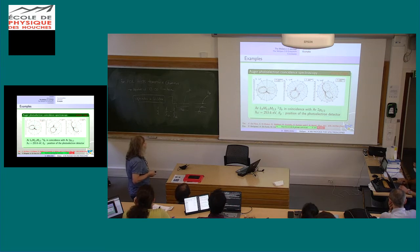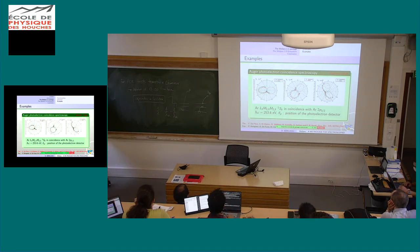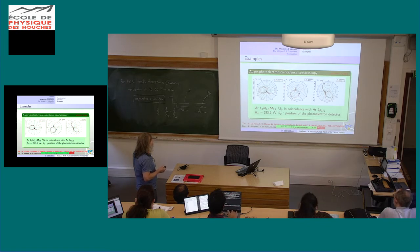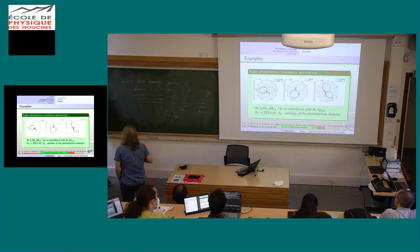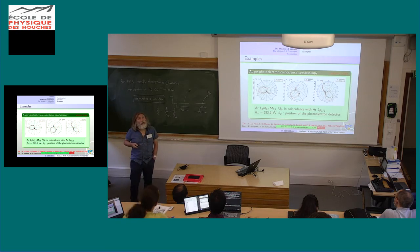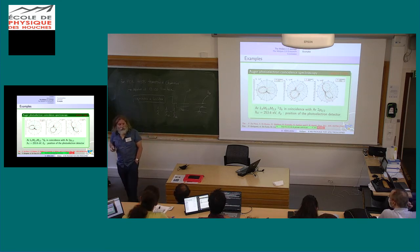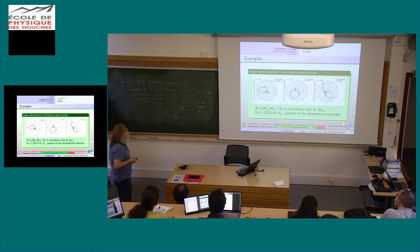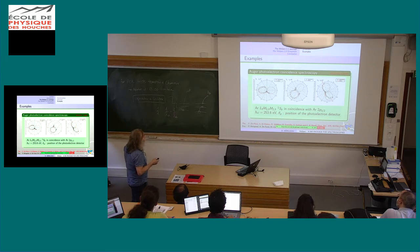We first tested our approach on a single atom to check we could get the same result as the atomic physics code — we did it with argon. This Auger line of argon, L3-M23-M23, in coincidence with the 2P3/2 photoelectron, at an energy of 253.6 eV. This is the position of the photoelectron detector. I think they have five detectors for the Auger and two for the photoelectron. You see that this is our calculation and this is the experiments — we've got a good agreement.